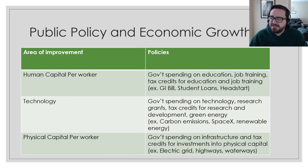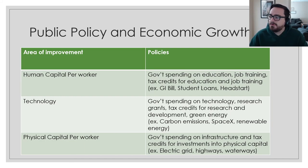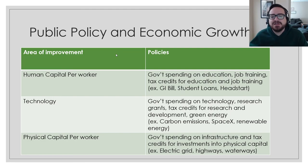Additionally, labor force can factor in — if you have more people working as a percentage of the overall population, like older people working a little bit longer, from an economic growth standpoint that's helpful because it improves the total amount of labor in your economy. There's a dark side to that, and lowering labor age gets a little fuzzy ethically, so these three main areas — human capital, technology, physical capital — are where we typically target.